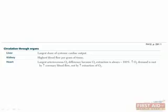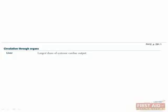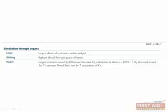This table about circulation through organs is a pretty small fact that is quite high yield. Please make sure to spend the time to memorize this. The liver gets the most blood, the kidney gets the most blood for its weight, and the heart extracts the most oxygen.